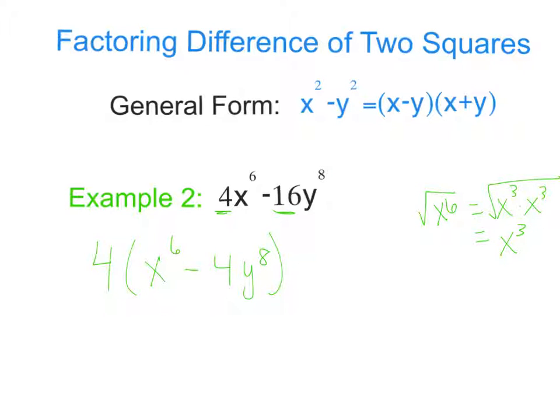So all we do is we take half the exponent. So what do you think the square root of 4y to the 8th will be? Remember, the square root of 4 is 2, and then what is half of the exponent? It is y to the 4th.